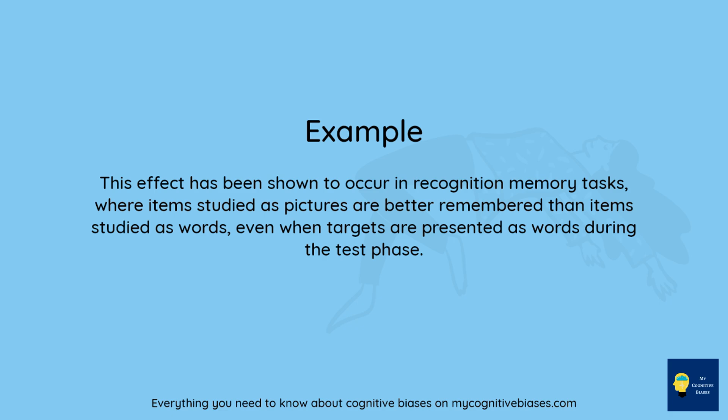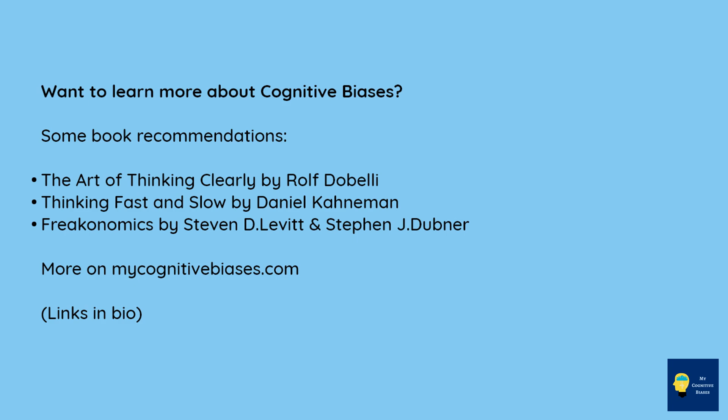Want to learn more about cognitive biases? Some book recommendations: 'The Art of Thinking Clearly' by Rolf Dobelli, 'Thinking Fast and Slow' by Daniel Kahneman, and 'Freakonomics' by Stephen D. Levitt and Stephen J. Dubner. More on MyCognitive.